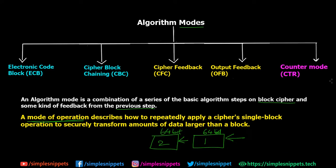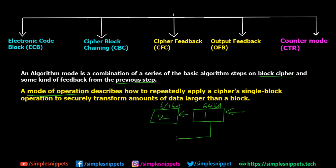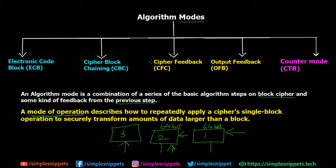In modes that use a feedback mechanism, whatever output we get from the first block is supplied as feedback to the second block and helps in the encryption of that second block. Then the output of the second block is supplied to the third, and so on. This is where the feedback mechanism comes into the picture, and it totally depends on what kind of mode we are selecting. I'm not going to go into detail for each mode here — I'll create individual videos for each of these algorithm modes.